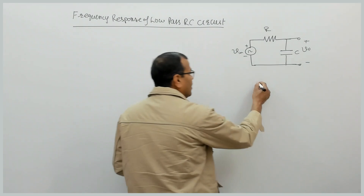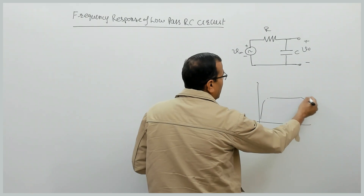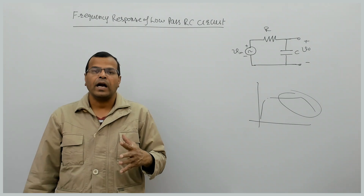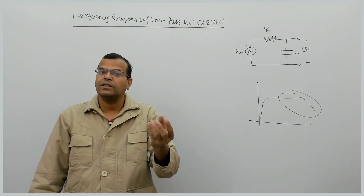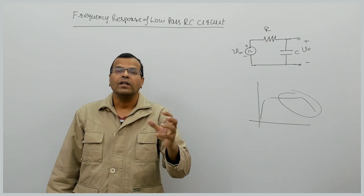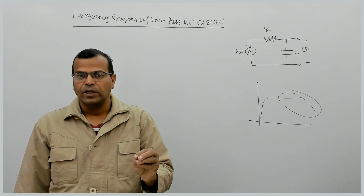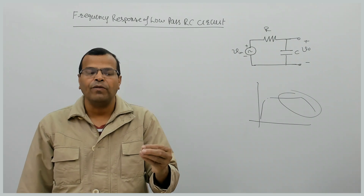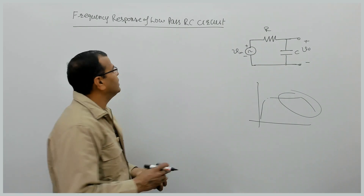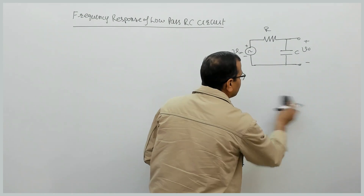If you remember, the response of amplifiers behaves like a low pass circuit in the high-frequency region. Since there are only resistances and capacitances in BJT and MOSFET amplifiers, these amplifiers behave like a low pass RC circuit. So for studying the high frequency response of BJT and MOSFET amplifiers, we need to first study the frequency response of the RC circuit.